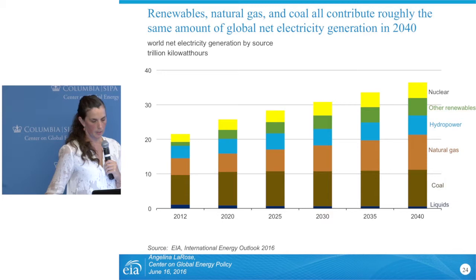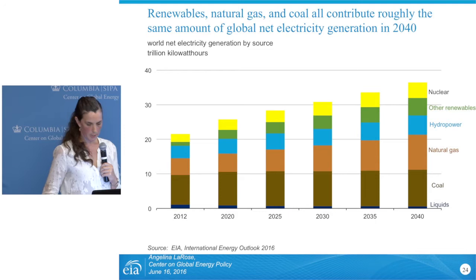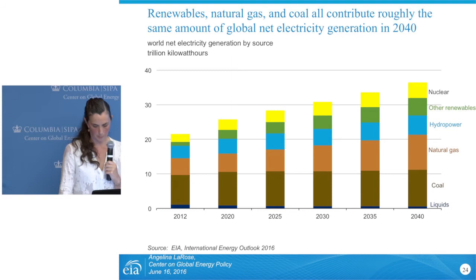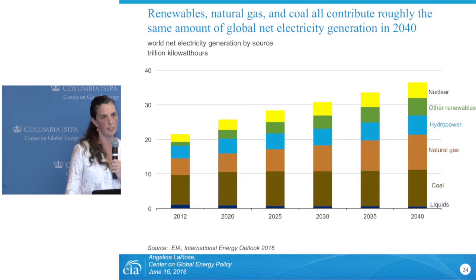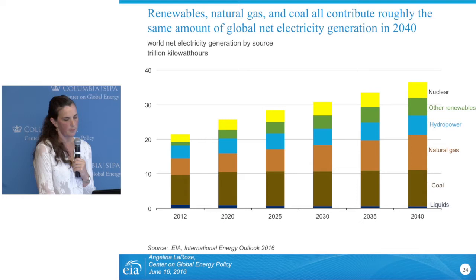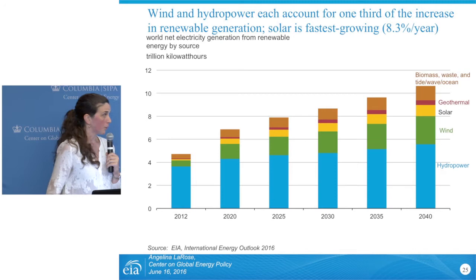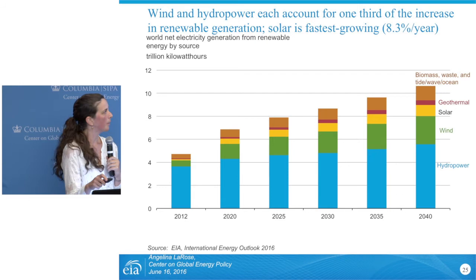In terms of electricity generated by fuels, we're seeing growth in natural gas as well as renewables, and this takes away some of the share that coal has typically held. Since the late 1980s, coal produced about 37–40% of the world's electricity generation, and that falls to 30% by 2040. So by 2040, natural gas, coal, and renewables roughly have equal shares. EIA includes large hydropower as a renewable.